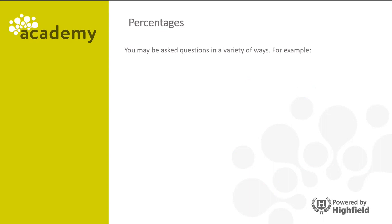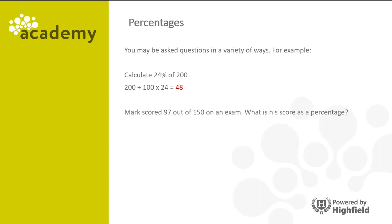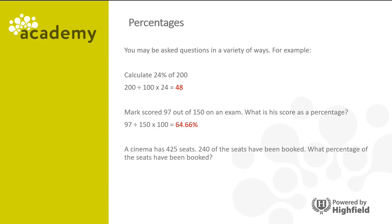Calculate 24% of 200: 200 divided by 100 times 24 equals 48. Alex scored 97 out of 150 on an exam — as a percentage that's 97 divided by 150 times 100, which equals 64.66%. A cinema has 425 seats and 240 have been booked — the calculation is 240 divided by 425 times 100, giving 56.47%.